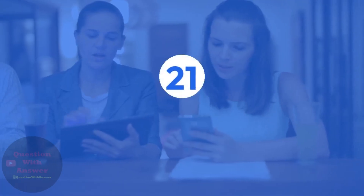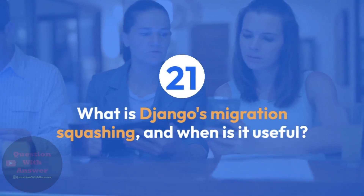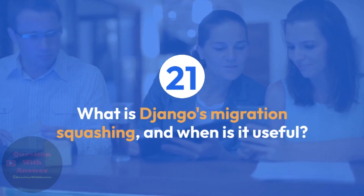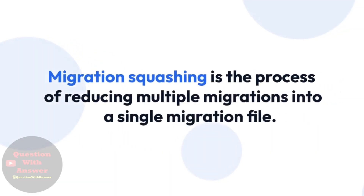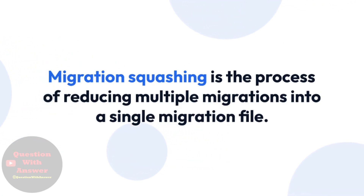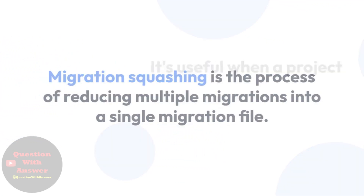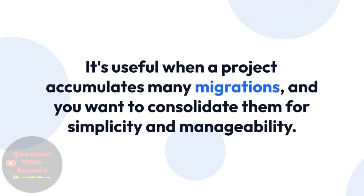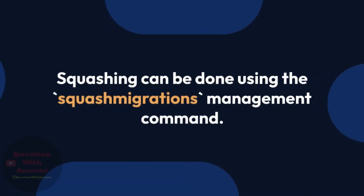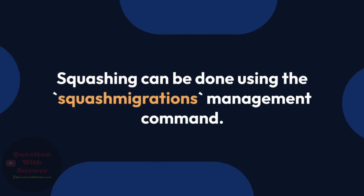Question 21: What is Django's migration squashing, and when is it useful? Answer: Migration squashing is the process of reducing multiple migrations into a single migration file. It's useful when a project accumulates many migrations and you want to consolidate them for simplicity and manageability. Squashing can be done using the squashmigrations management command.